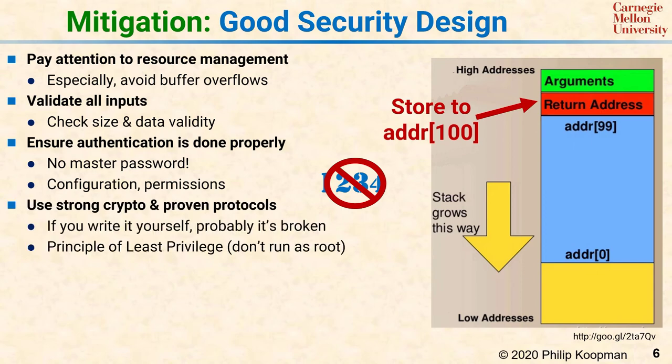Make sure to use strong cryptography and proven security protocols — cryptography is one place you should never invent something new. Instead, use well-established, publicly analyzed cryptographic algorithms and security protocols. Also invoke the principle of least privilege, meaning never run software with more permissions than it needs. For example, never run application code as root on a Unix system or use administrator accounts for applications on Windows, as those give attackers too much power if they compromise the system.